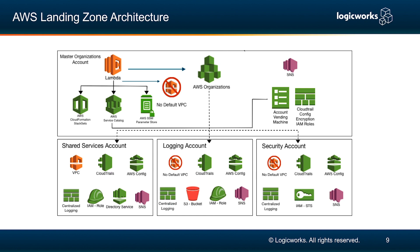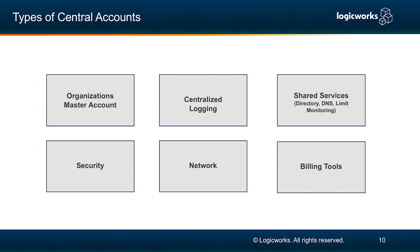The logging and security accounts will have the default VPC disabled, and they will have CloudTrail, Config, and all of your logging enabled in every one of the accounts. Beyond the default three, you can also have other core unit accounts like networking or billing tools. Many large-scale migrations actually do need a networking environment so that you can have something like a Transit VPC or a Transit Gateway that would allow for BGP or any sort of network address translation that you might need to do in your migration from your data center.